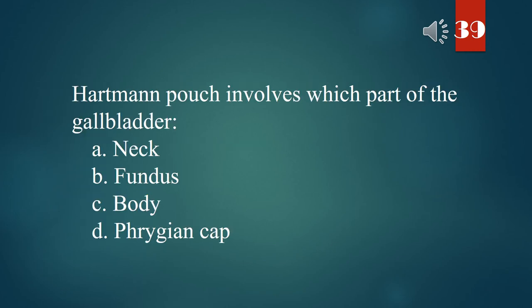Hartmann's pouch involves which part of the gallbladder? A. Neck. B. Fundus. C. Body. D. Phrygian cap. The answer is A. Neck.